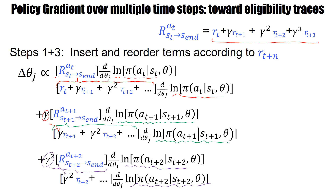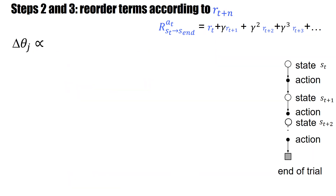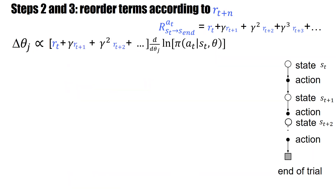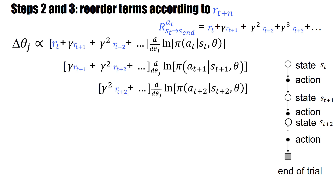We now have this new formula. Instead of the line we had before, we now work with this new line. This is step one — I just inserted the expression for the return. This is what we now have: this expression for the return. So far this is just a rewrite.